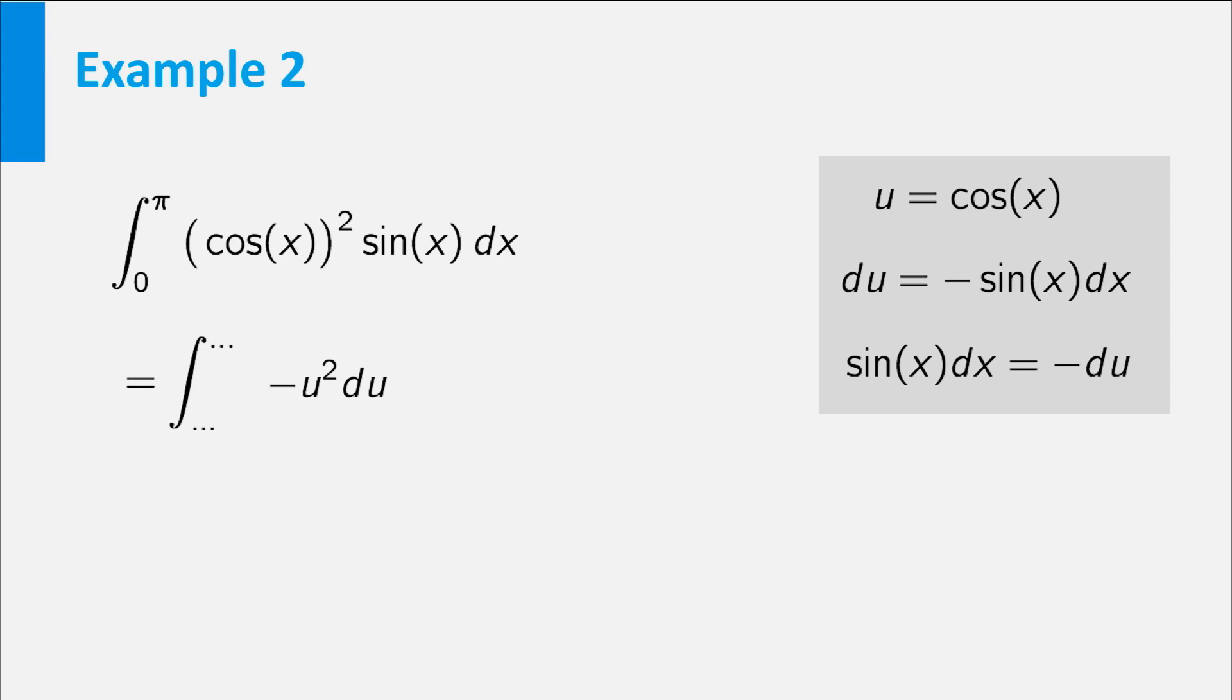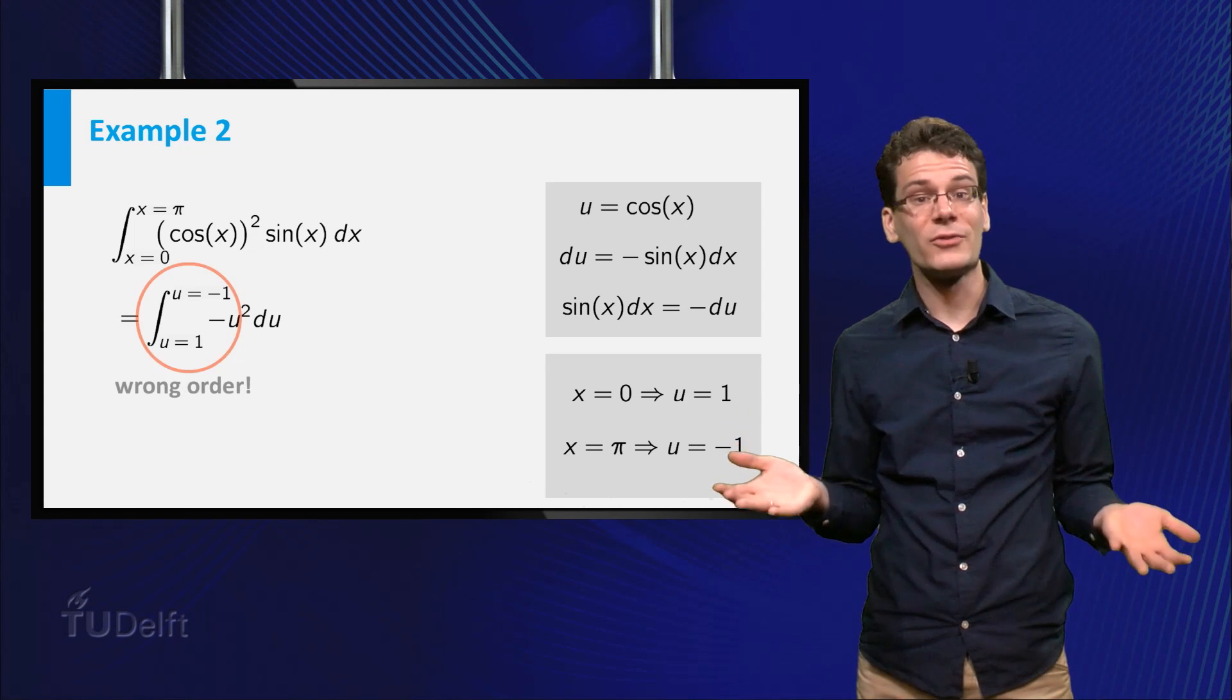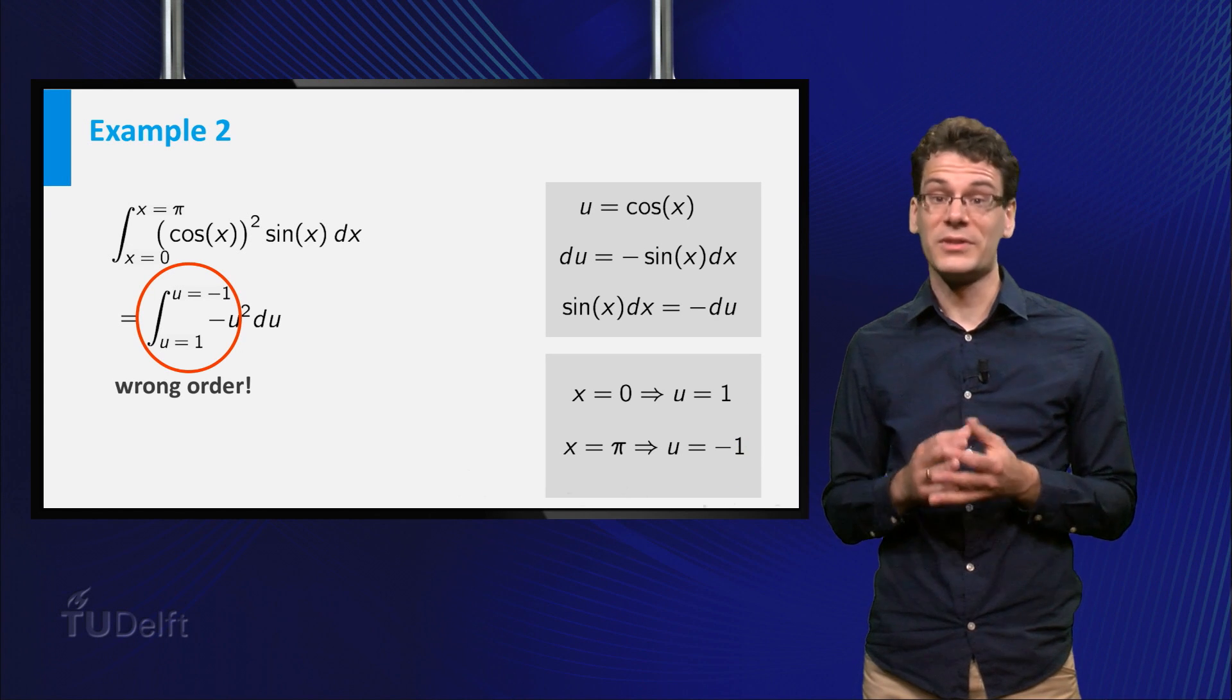What will the boundaries be? Well, if x is equal to 0, u is equal to the cosine of 0, which is 1, so the new lower boundary is 1. If x is equal to pi, then u is equal to the cosine of pi, that is minus 1, so the new upper boundary is minus 1. You see that the boundaries are in the wrong order, but this is easily resolved.